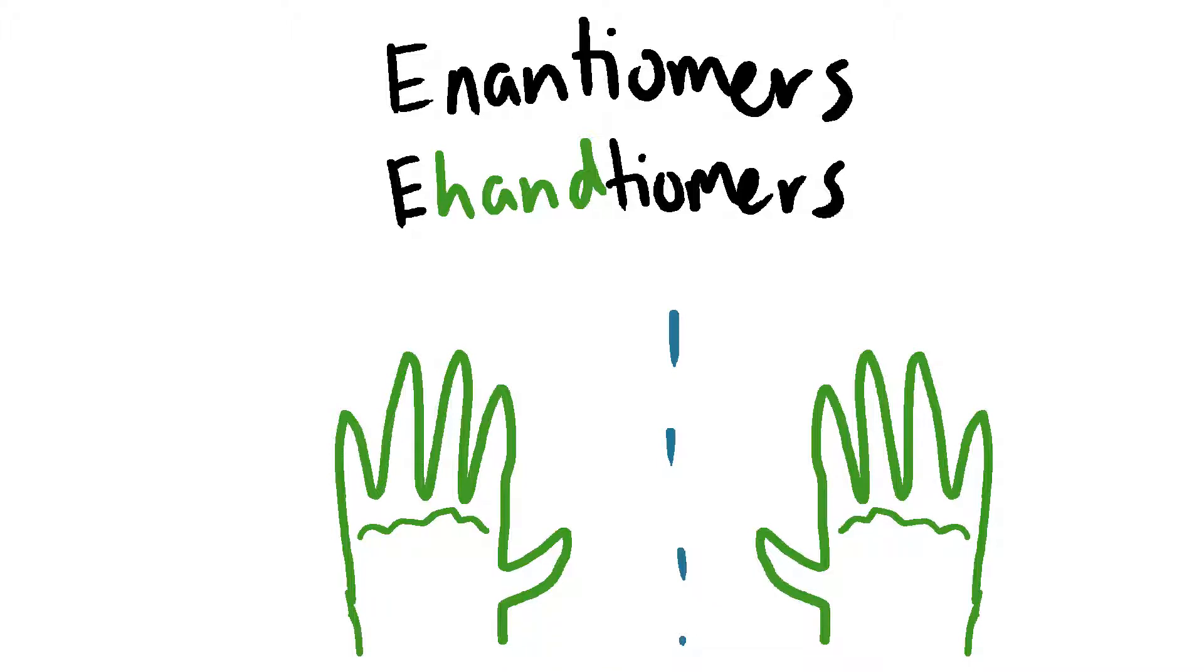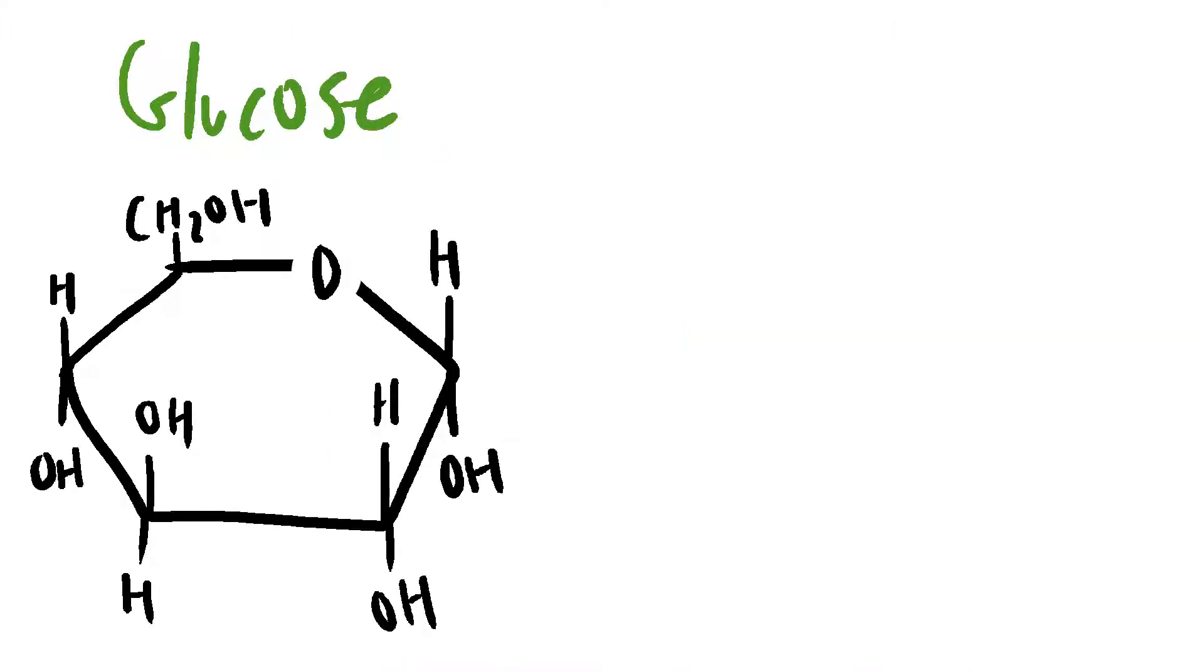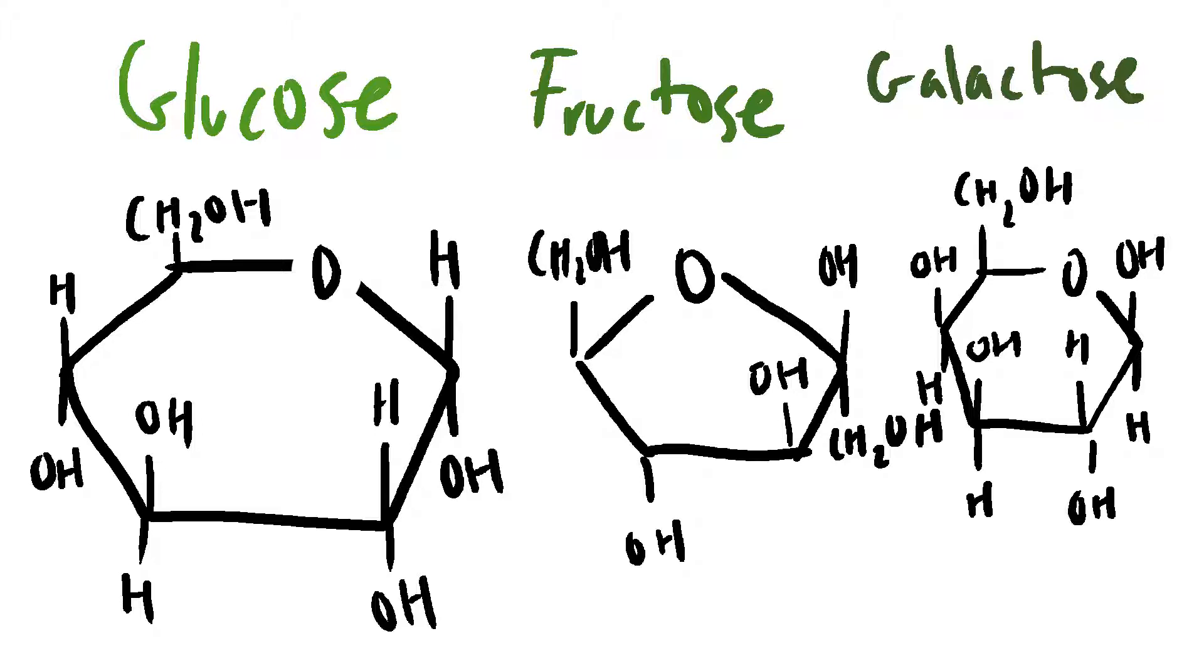Now let's look at some bigger organic compounds. Some sugars, such as glucose, are made up of a 6-carbon ring. Fructose and galactose are structural isomers of glucose.